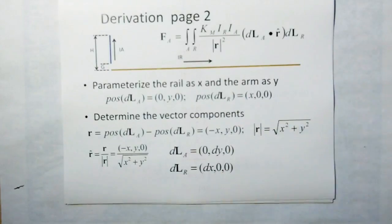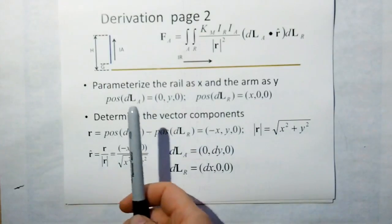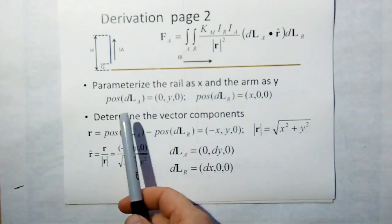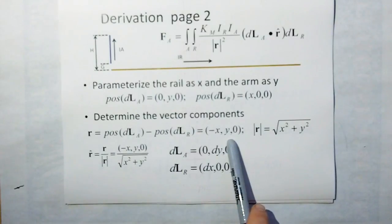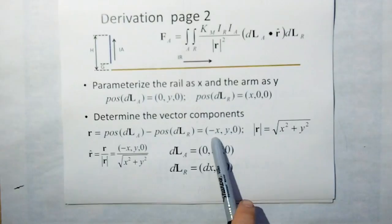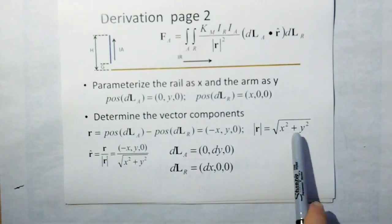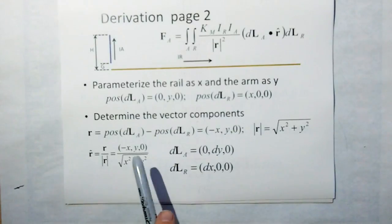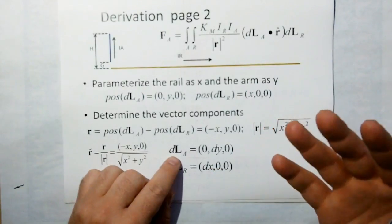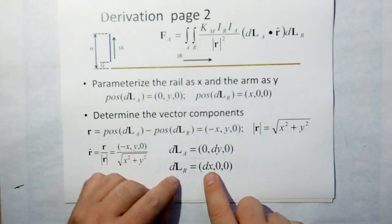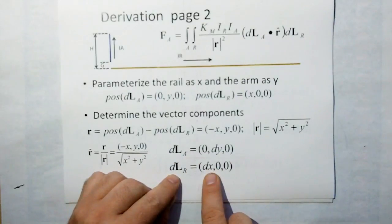Let's determine the other vector components. R is the subtraction of the position of the target minus the source or the armature minus the rail. The magnitude of R is just the distance equation which works out to that. The direction vector for R is R divided by the magnitude. The different directions of the differential length are dy for the armature and dx for the rail.